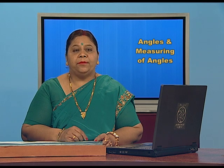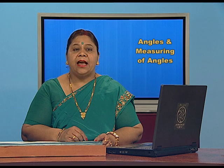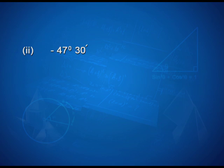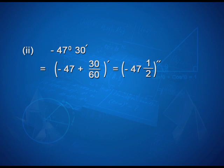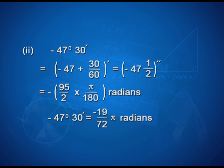One more example involving degrees and minutes: −47° 30' can be written as −(47 + 30/60)° = −47.5°, which converts to −19π/72 radians.